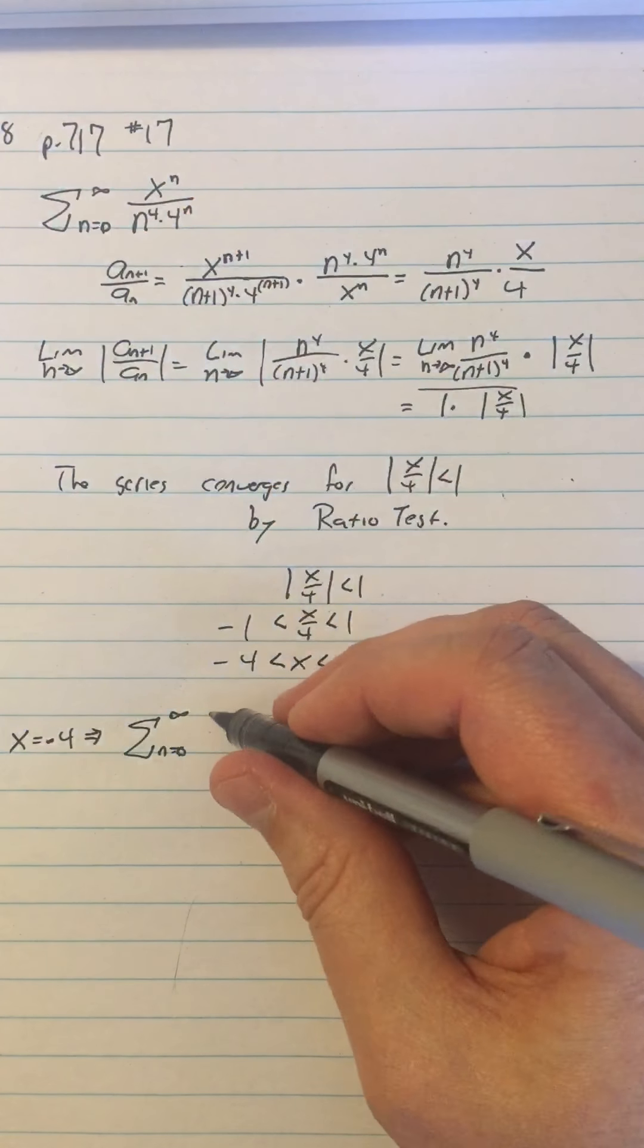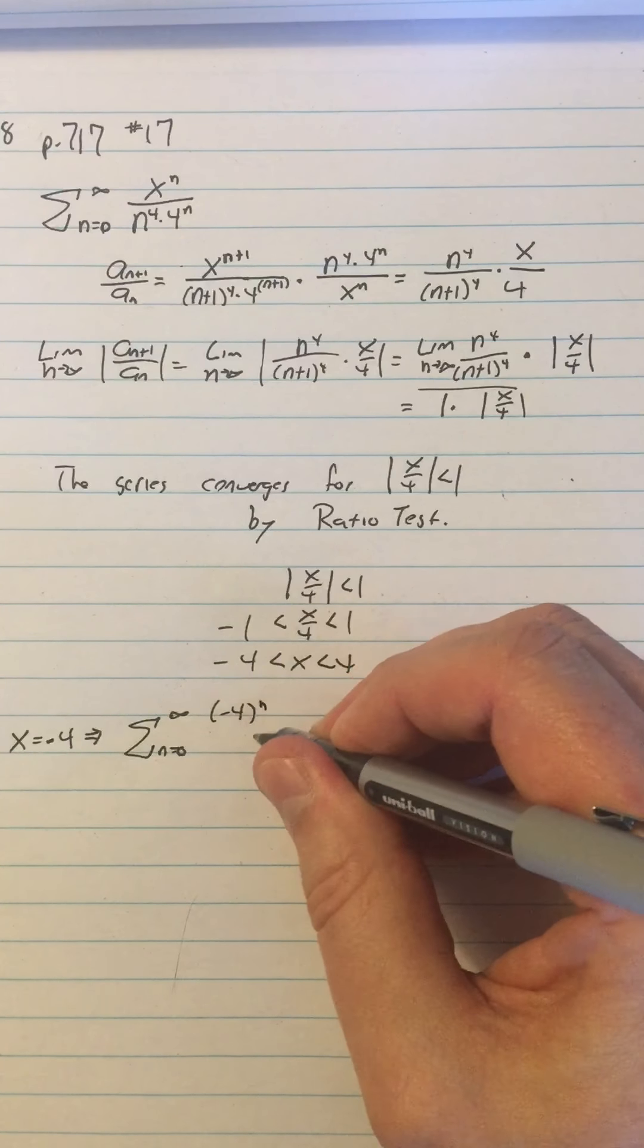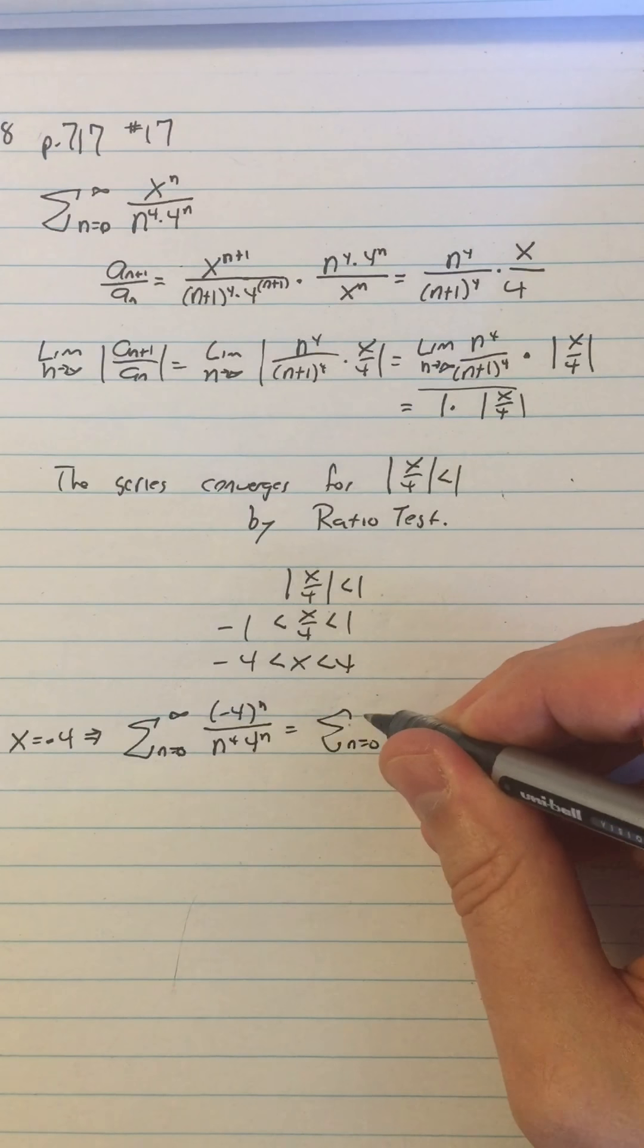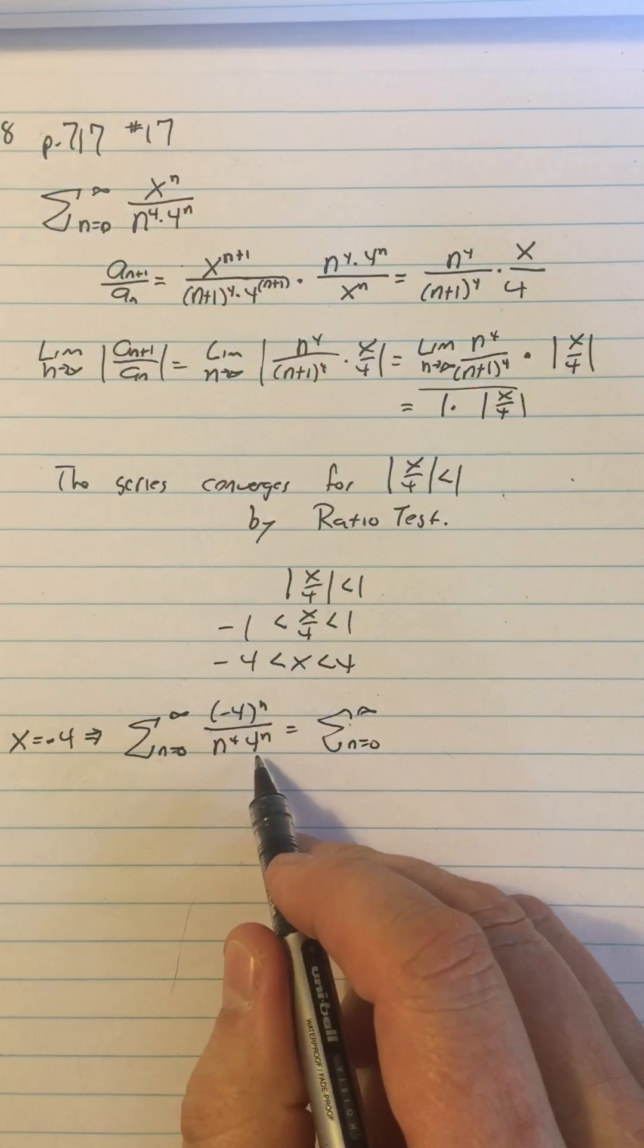Anyway, if I put in negative 4 for the x, I get negative 4 to the n over n to the fourth times 4 to the n. So here's where I have to sort of look carefully and try and spot things, like I have negative 4 to the n over 4 to the n.